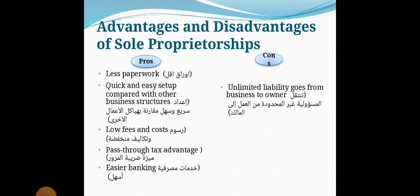Now for the constraints: it has unlimited liability which extends from the business to the owner, and it has difficulty in raising capital, since there is only one individual responsible for the whole company. Let's move now to the second type, which is partnership.